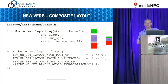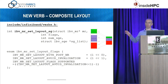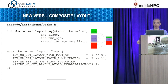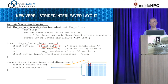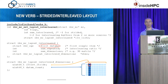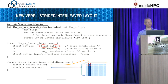The user registers their matrix with a separate MR, then we build on top of that MR a virtually non-contiguous MR. We've added two verb calls: one for composite using scatter-gather — IBV_MR_set_layout_scatter_gather — and one for interleaved — IBV_MR_set_layout_interleaved — which also handles strided data. The flags will be described in the next slide.